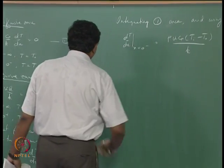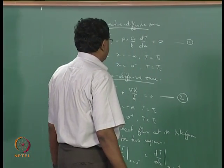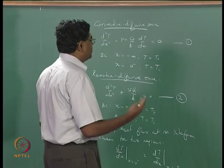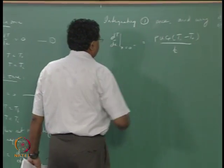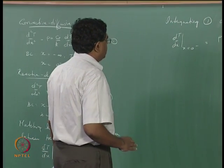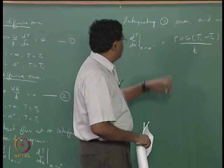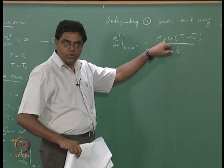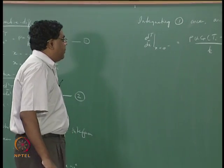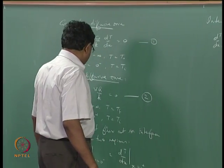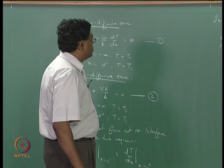The slope of the temperature profile in the preheat zone, leading up to the reaction zone, is given by ρuCp(Ti – T0) divided by k. We must keep in mind that we are actually hunting for u — this is what we do not know and what we are looking for — and we are hoping to get this when we use the interface matching condition between the two zones.